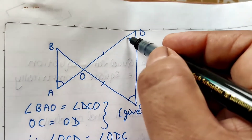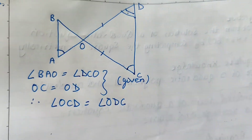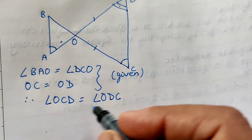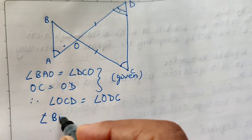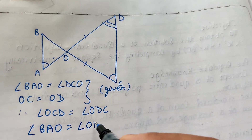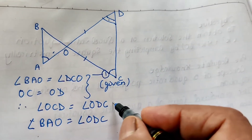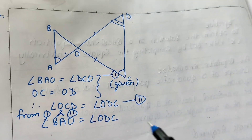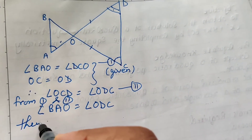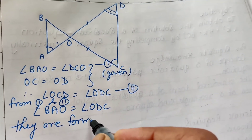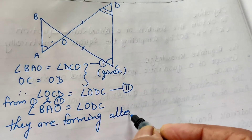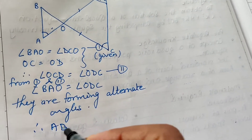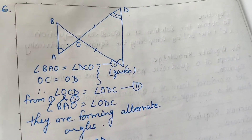Since angle BAO equals angle DCO (equation 1) and angle OCD equals angle ODC (equation 2), from equations 1 and 2, angle BAO equals angle DCO. These two angles are forming alternate angles with respect to line AB and CD. Therefore, since alternate angles are equal, AB is parallel to CD.